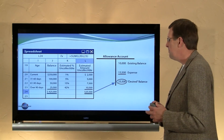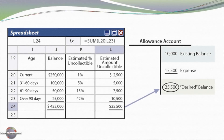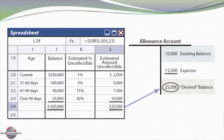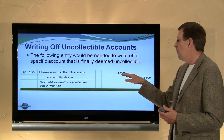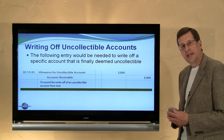I know from experience that students sometimes find this problematic. So let's look. Here's our aging — it shows the $25,500 desired balance. Notice how that corresponds: I had a $10,000 existing balance in my allowance account, I need $25,500, so I'm adding $15,500. When we write off a specific account, we'll debit the allowance account and credit accounts receivable.